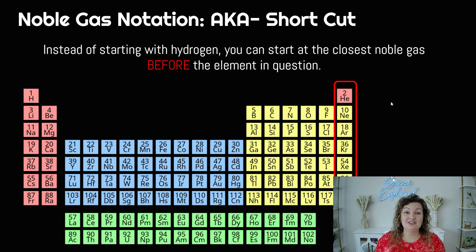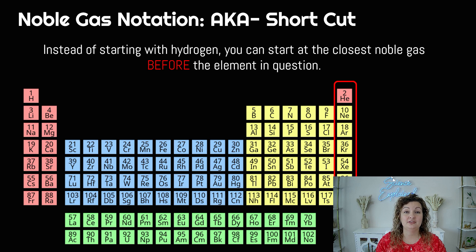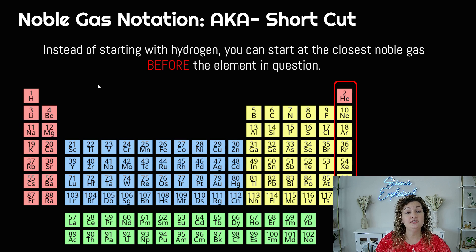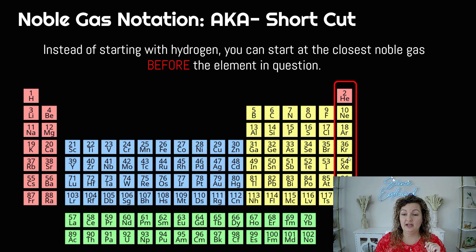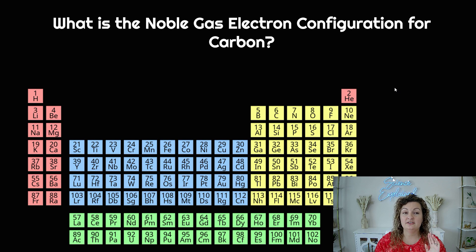Shortcut time — everybody loves a shortcut. Those can get so lengthy. So we have the noble gas notation, which is just an abbreviated way to do these electron configurations, and it will save you a bunch of time. Instead of starting with hydrogen every single time and reading it like a book like we've been doing, instead we're going to start at the closest noble gas that is before the element in question — the one that you're looking at. Remember, all the noble gases are right here down the line of the periodic table.